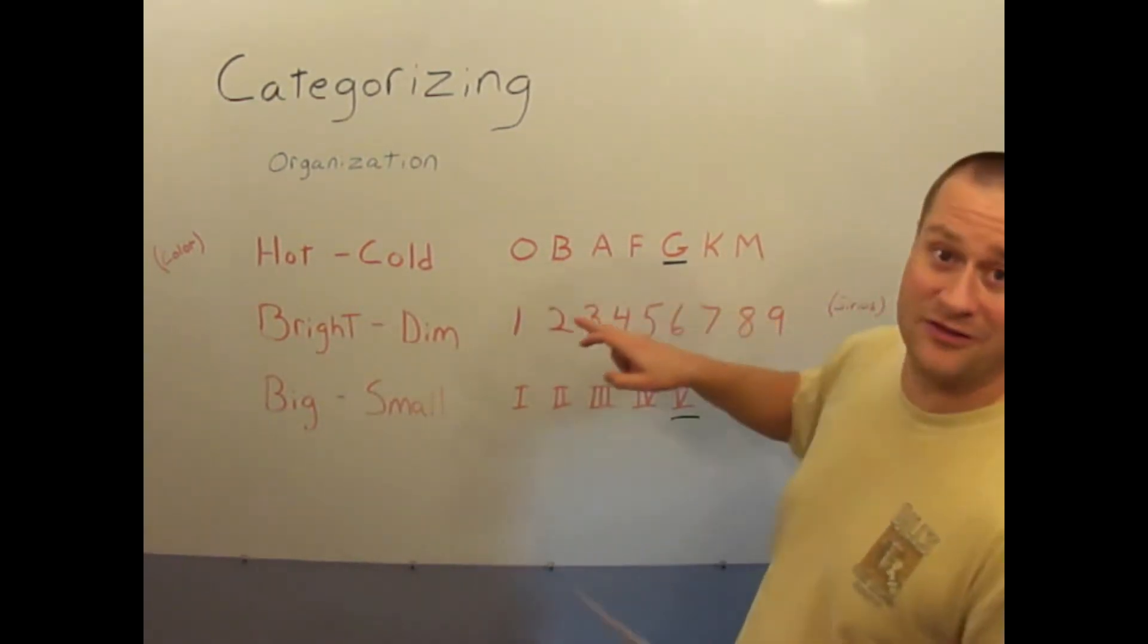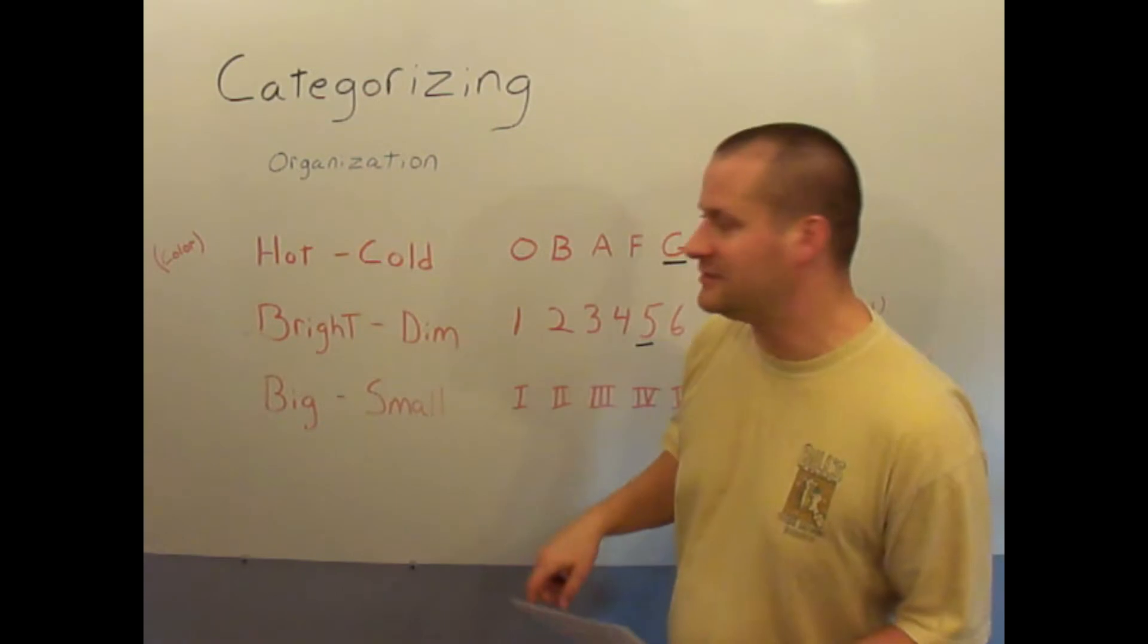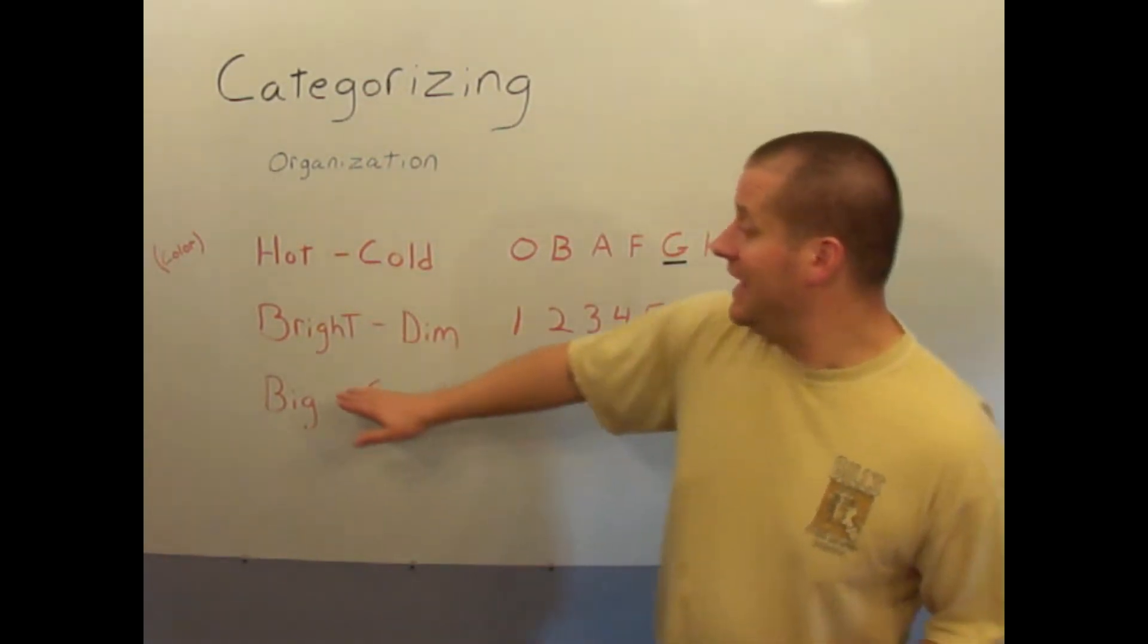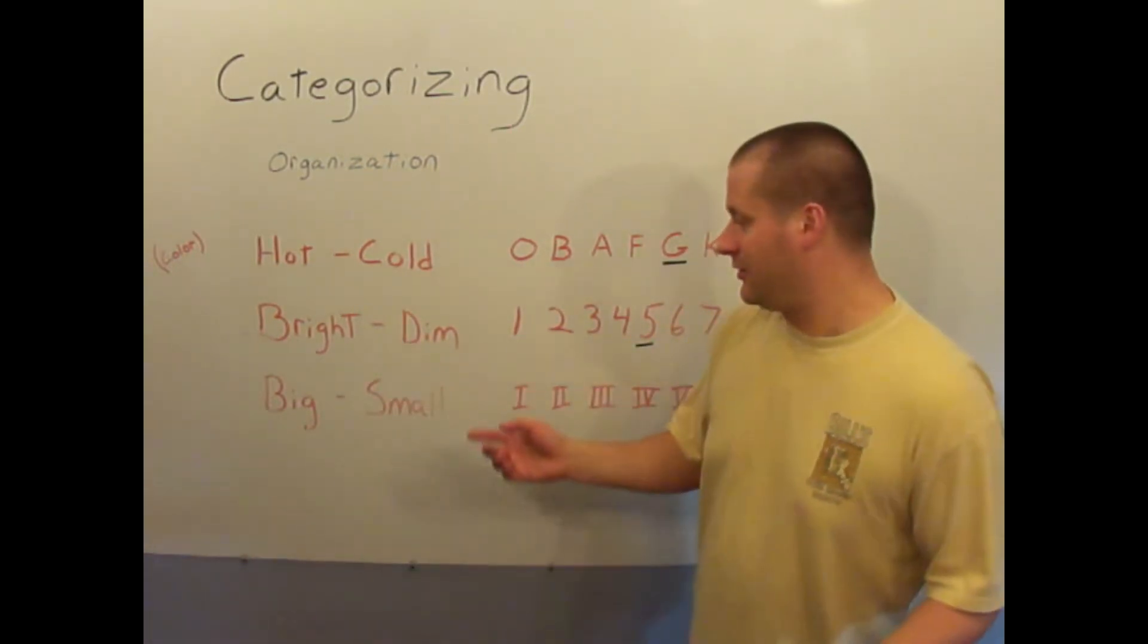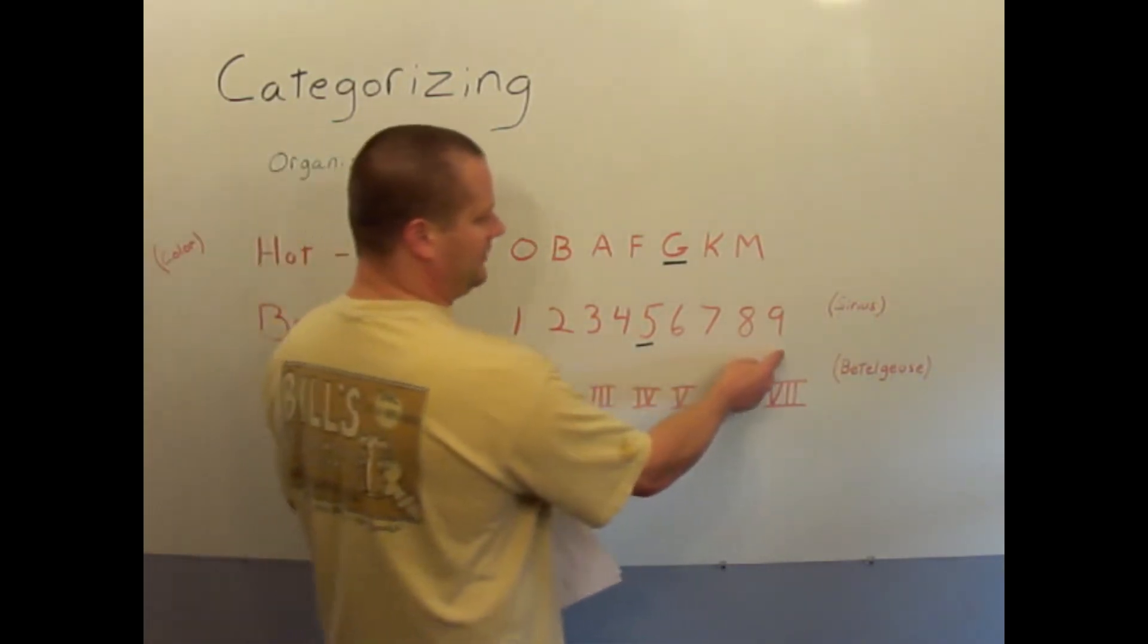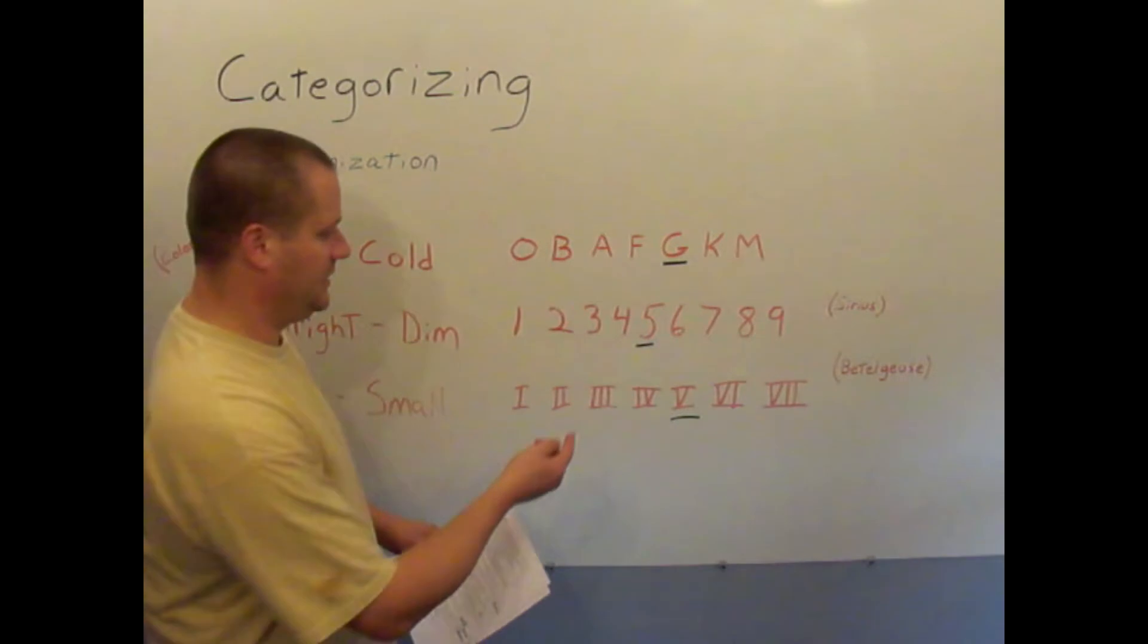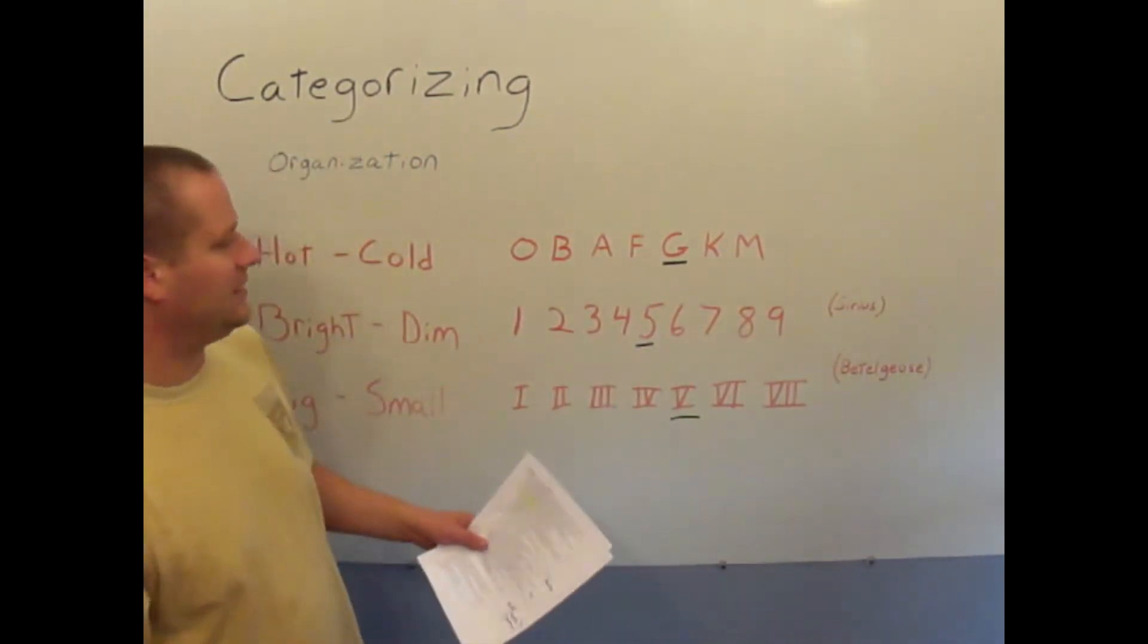Our Sun is a G. So if this is hottest, this is coolest, we're third from the coolest of suns, or categories of suns. Next is the brightest and the dimmest. That's a real simple categorization. It's just 1, 2, 3, 4, 5, 6, 7, 8, 9. For the Earth's sun, it is a 5. So we're kind of right smack in the middle as far as bright versus dim.